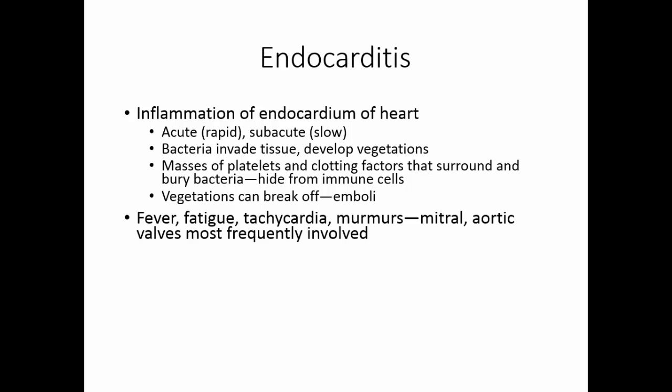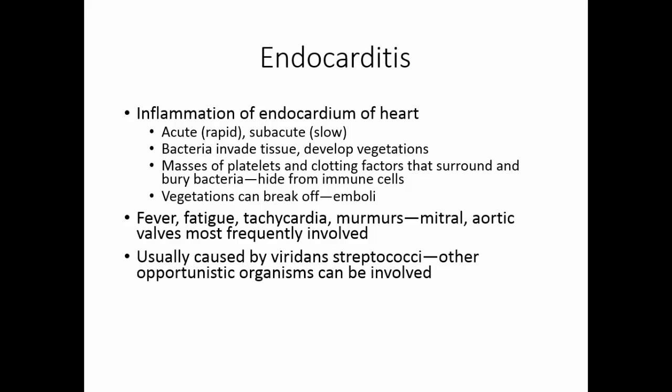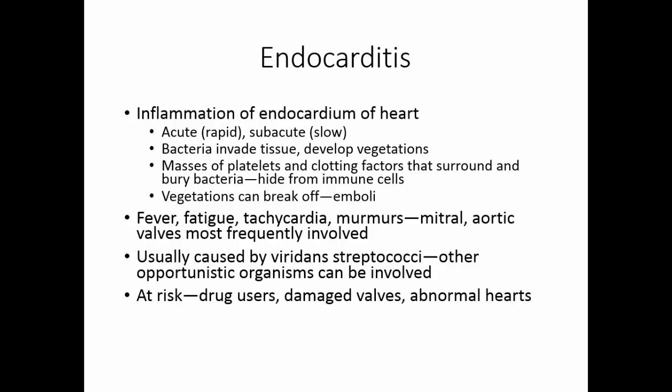Endocarditis usually presents with fever, fatigue, tachycardia, and heart murmurs. The mitral valve and the aortic valve are the most frequently involved. It is usually caused by viridans streptococci, the normal throat flora. People at risk include IV drug users and people with damaged heart valves or congenital heart abnormalities. People with damaged valves may have had rheumatic fever as children, and people with artificial valves are also at risk.